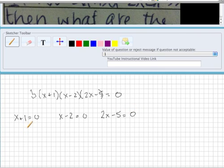Well, if x plus 1 equals 0, then I subtract 1 from both sides to get x equals negative 1. If x minus 2 equals 0, I'm going to add 2 to both sides to get x equals 2.